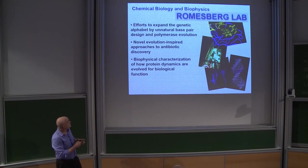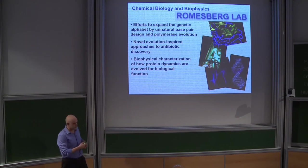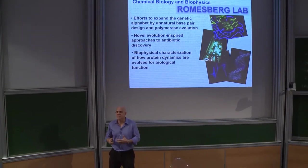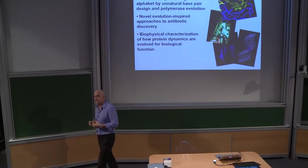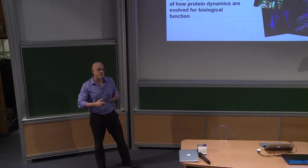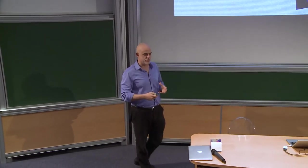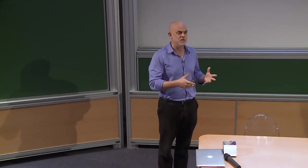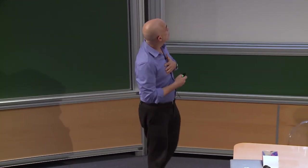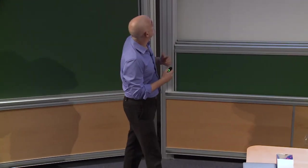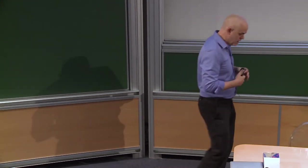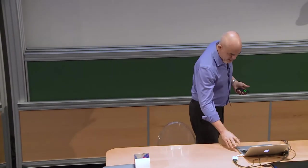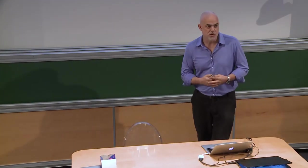The three projects, very briefly: one, trying to use concepts of evolution to design or identify and optimize novel scaffolds for antibiotic development; a rigorous chemical, physical approach to understanding the role of adaptive mutations to protein function; and what I'm going to talk about today are our efforts to develop an unnatural base pair with which to expand the genetic alphabet and eventually the genetic code.